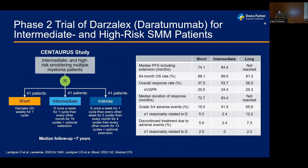With the advent of more novel agents, the monoclonal antibody daratumumab has been studied in smoldering myeloma in the Centaurus study, looking at short and longer durations among intermediate and high-risk smoldering patients. It showed overall response rates of roughly 30 to 60%, with progression-free survival of about 74 months or longer — longer than historical controls. However, there was no comparator arm in this study.